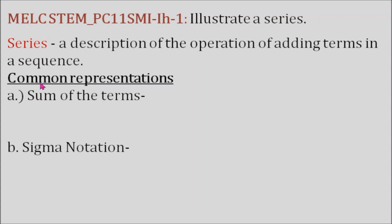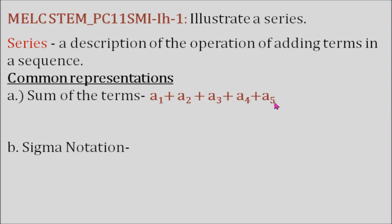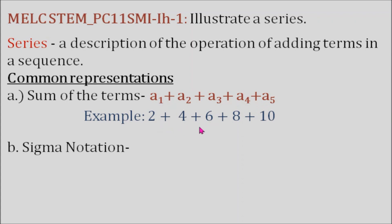There are two common representations. The first one is the sum of the terms. So if we have the terms a sub 1, a sub 2, a sub 3, a sub 4, and a sub 5, we just have to add all of them up. Specifically, if our terms are 2, 4, 6, 8, 10, it's simply 2 plus 4 plus 6 plus 8 plus 10.